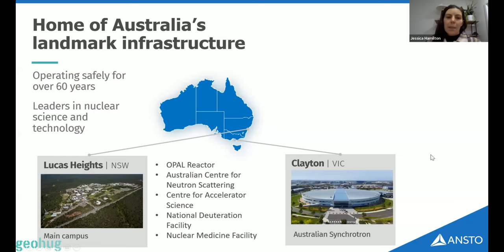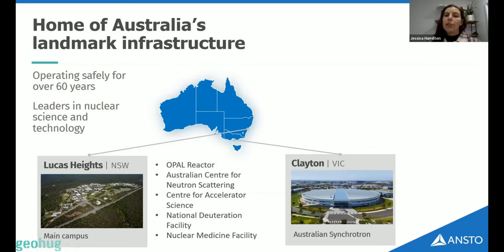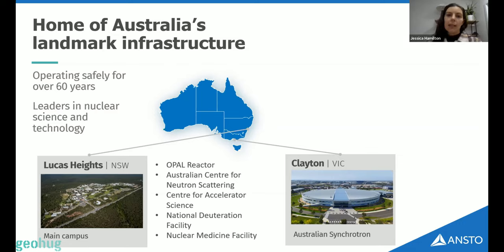Before I go any further — who is ANSTO? ANSTO is the Australian Nuclear Science and Technology Organization. I represent the Australian Synchrotron campus in Melbourne, but we have a lot of big infrastructure across New South Wales, and a lot of general expertise in things like mineral processing, environmental science, material science, and of course nuclear science. We are a really big research and science infrastructure organization.